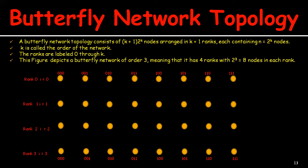Now we apply the algorithm. For node p_(1,0): i = 1, j = 0. The binary representation of j is 0,0,0. We invert the first bit: 0 becomes 1, giving 0,0,1 — wait, inverting the first bit of 0,0,0 gives 1,0,0. One connection is p_(0,0) and the other is p_(0, m) where m corresponds to inverting the first bit.